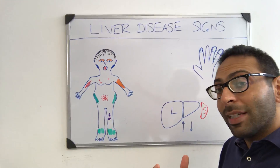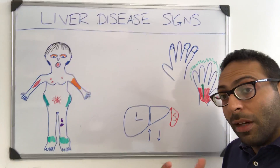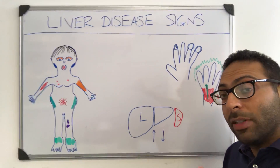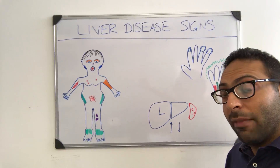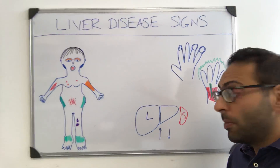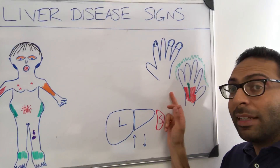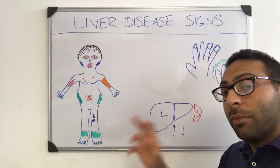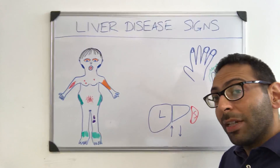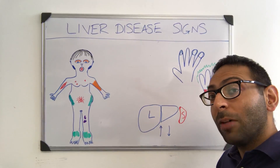So there are lots of different causes, signs, and symptoms of chronic liver disease. You split it into the abdomen, the hands, and the rest of the body. Memorize the pictures and you can start to make a bit more sense of it all.